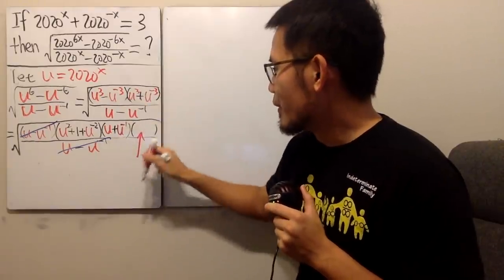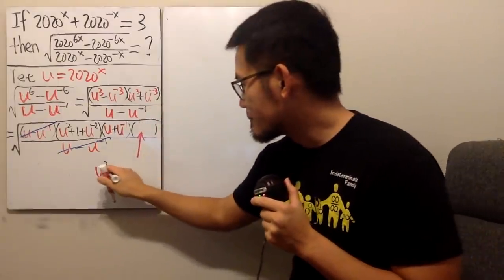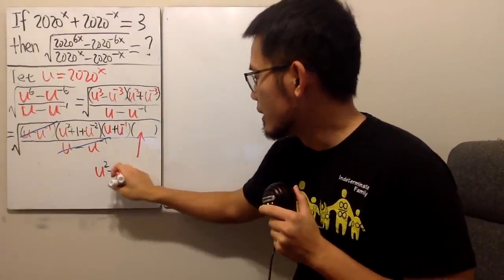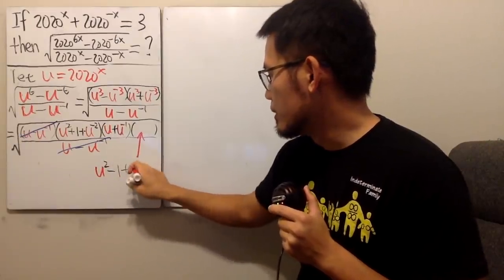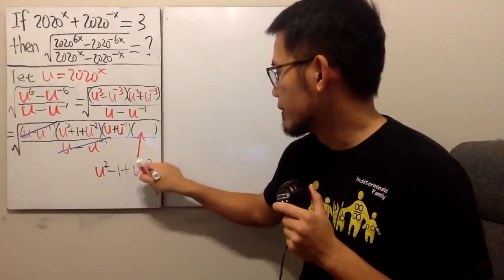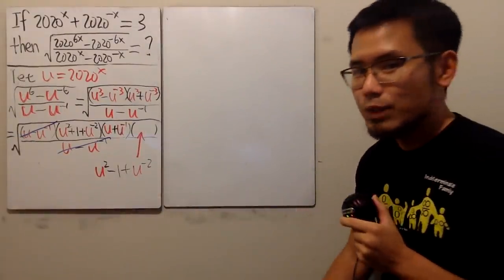Factoring this right here, we will end up with u squared and then we have to subtract this times that, which is just one, which is similar to that. And then just add u to the negative two. So this goes here. All right, that should be okay. Now let's see what else we can do.